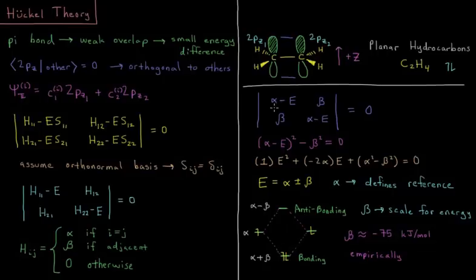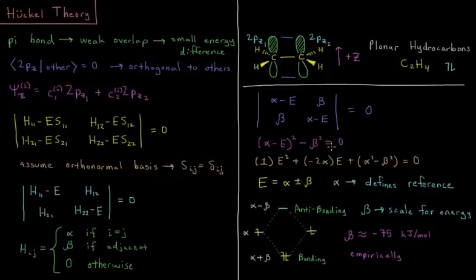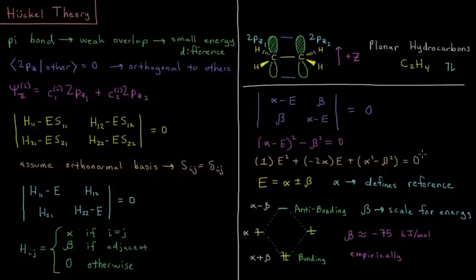That gives us a determinant of alpha minus E, beta, beta, alpha minus E, determinant equals 0. So we have this diagonal, alpha minus E quantity squared, minus the opposite diagonal, beta squared, is going to equal 0. If I expand this polynomial and then pull it out in terms of powers of E, I'm going to get 1 times E squared plus minus 2 alpha times E plus alpha squared minus beta squared equals 0.